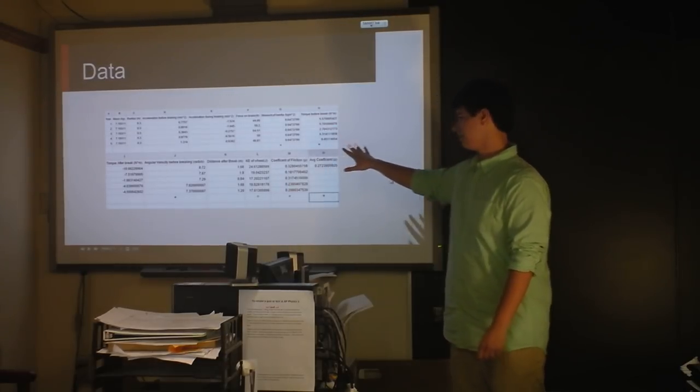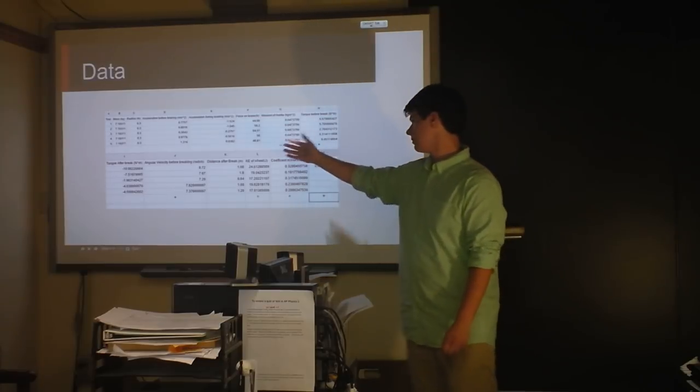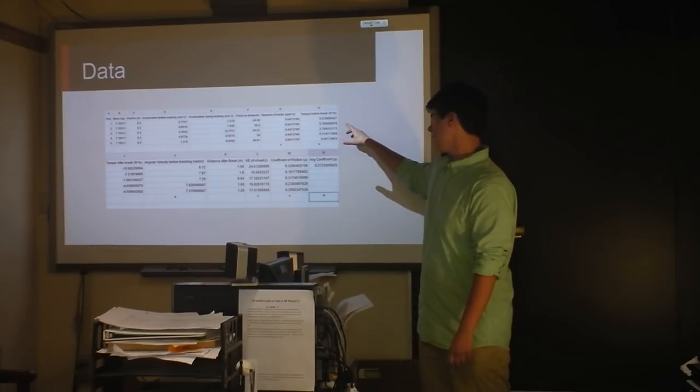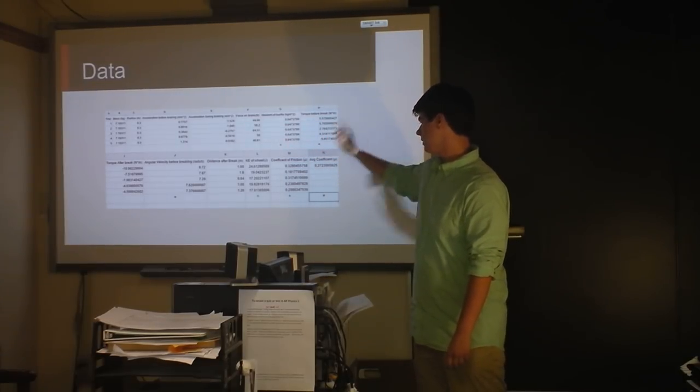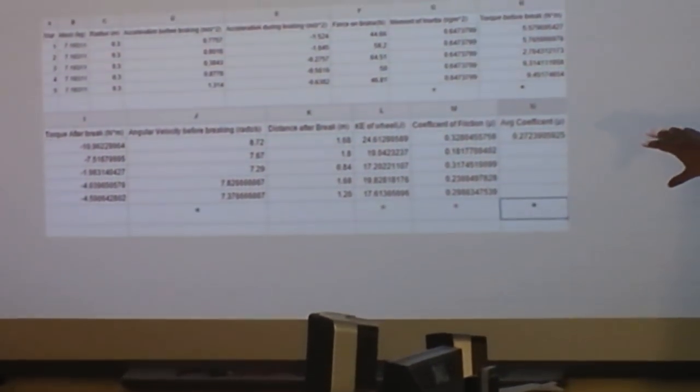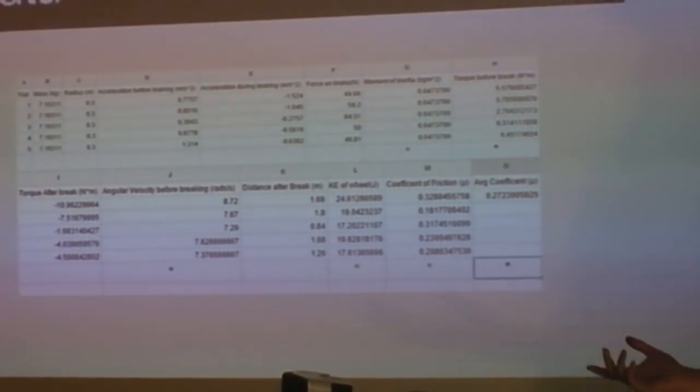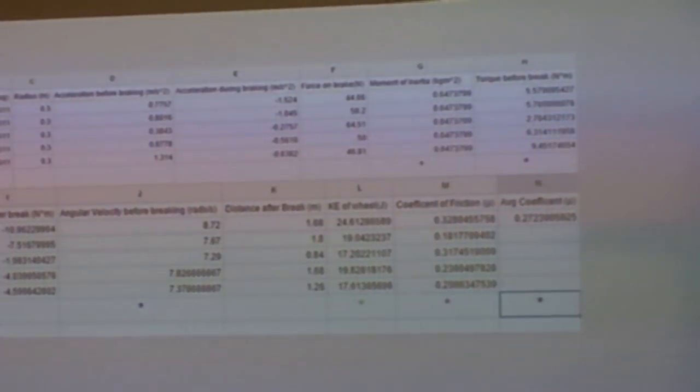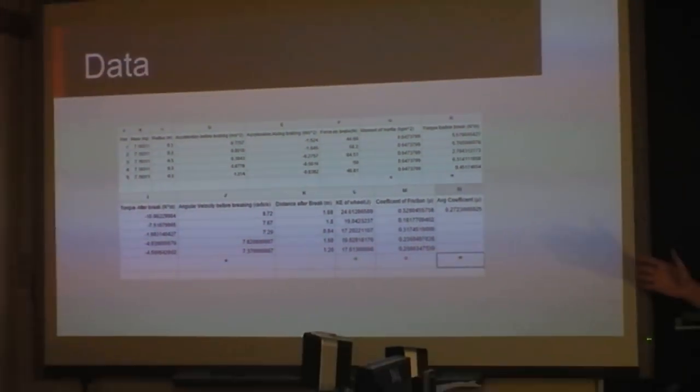So this was my data. I had all this, and here ended up being the coefficient of friction. It was like 0.27 was the average, which isn't that far off. Which was, I expected it to be higher, personally, than it was.